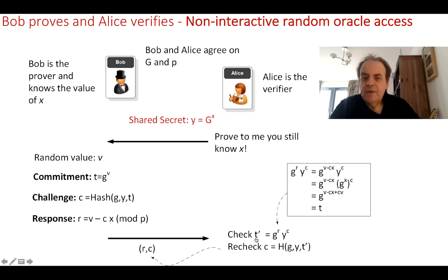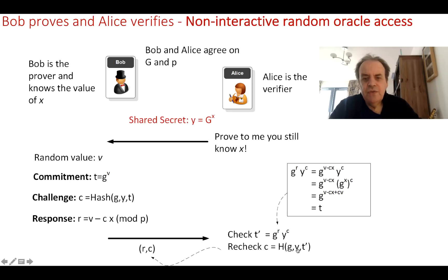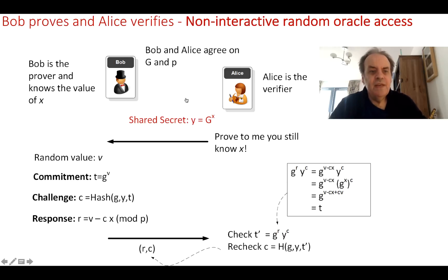Alice is able to compute her own value of t. She then does a quick check: she retakes the g value, the y value she calculated, and her freshly computed t, and uses them to create the hash. If the c value she computes matches the c value sent by Bob, then Bob has proved that he knows x.